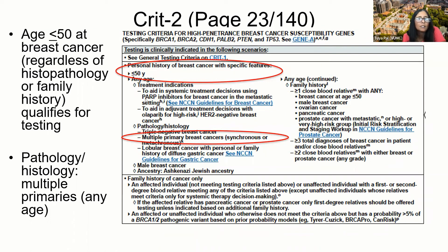On page CRITE-2, or page 23 of 140 of the PDF: in the past, any female diagnosed with breast cancer at or below age 45, regardless of family history or pathological subtype, was eligible for testing. We raised that age to 50, so anyone age 50 or below, regardless of histopathology or family history, now qualifies for testing. We also updated the multiple primaries section, where multiple primaries of breast cancer at any age would qualify for testing.